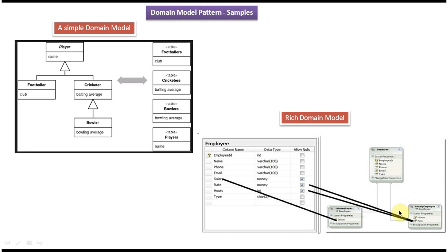This representation is a little bit complicated, so it is called rich domain model. In rich domain model, there are inner relations and some kind of patterns, and interrelated objects will be there. If you want to fill Salary Employee, then you have to fill Employee ID, name, phone, email, plus the salary information. If it is Hourly Employee, then you have to fill Employee ID, name, phone, email, plus hours and rate.